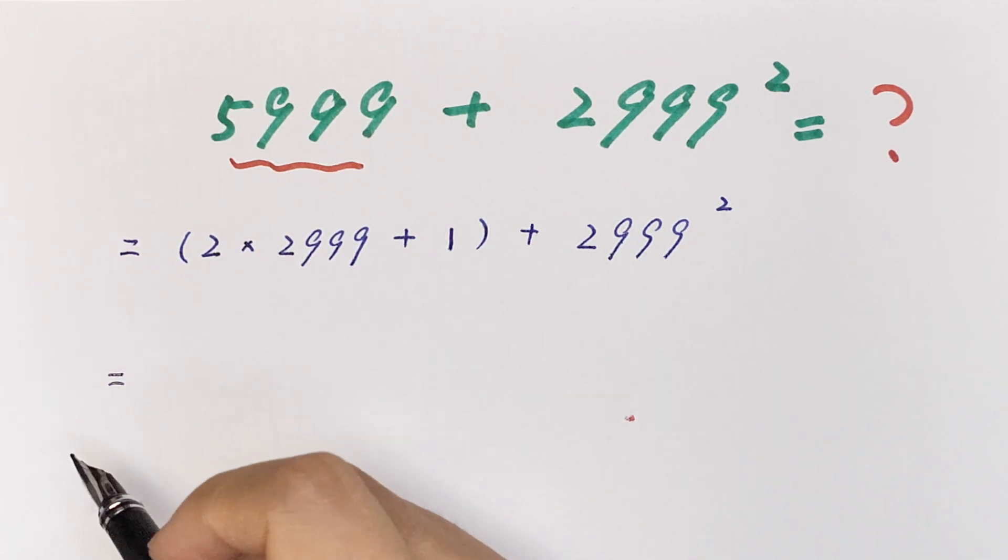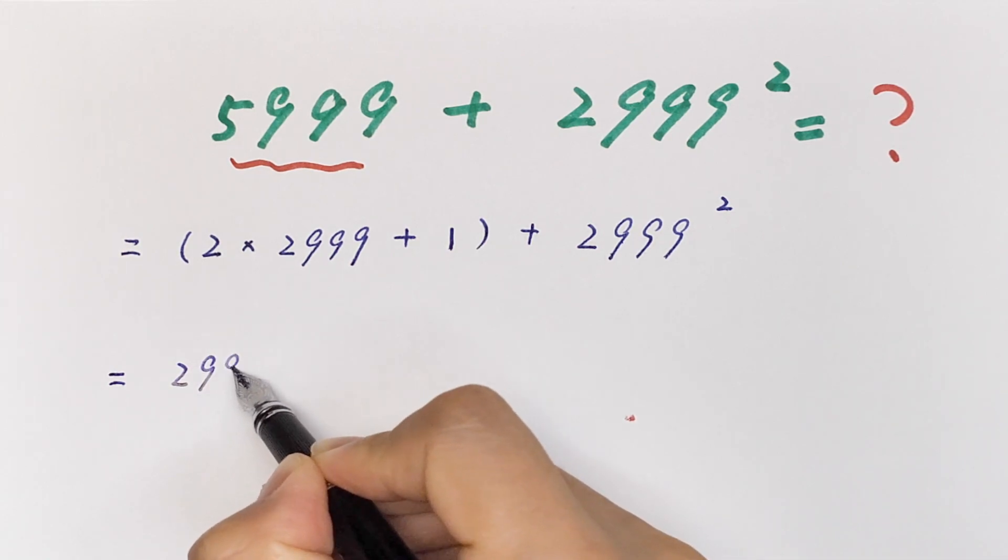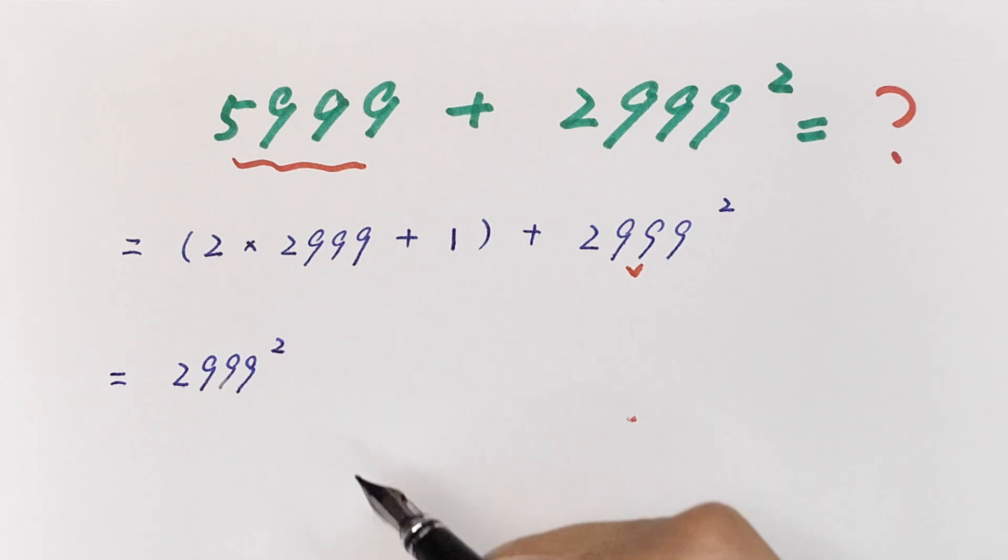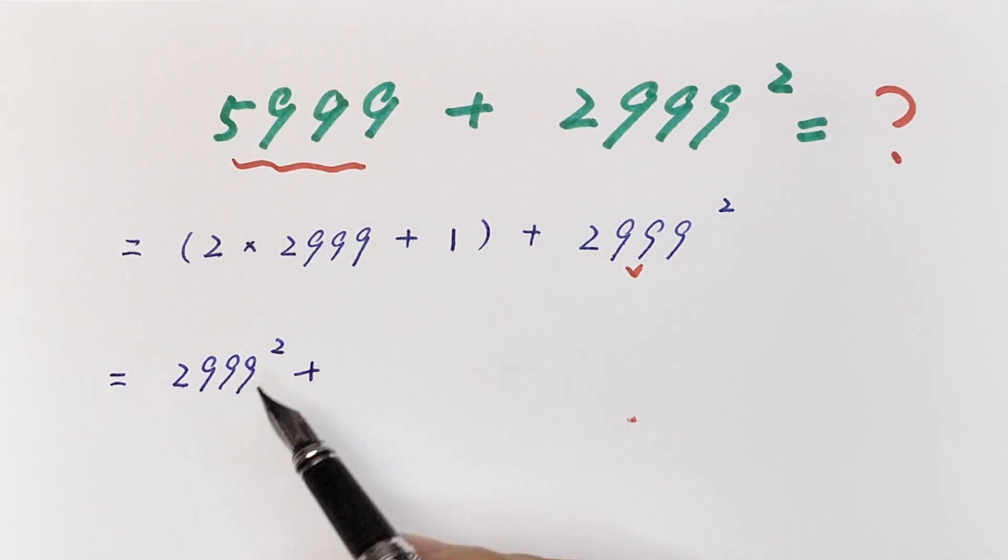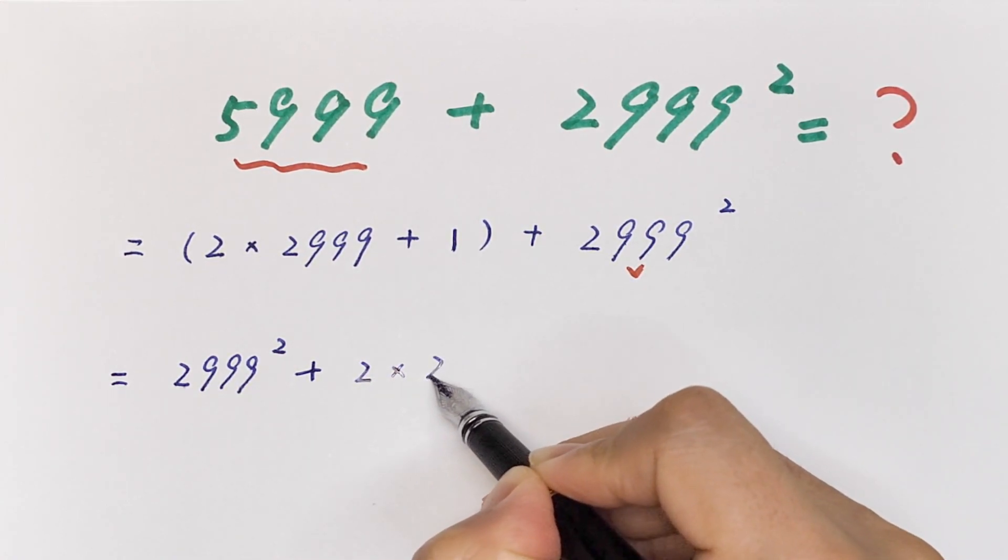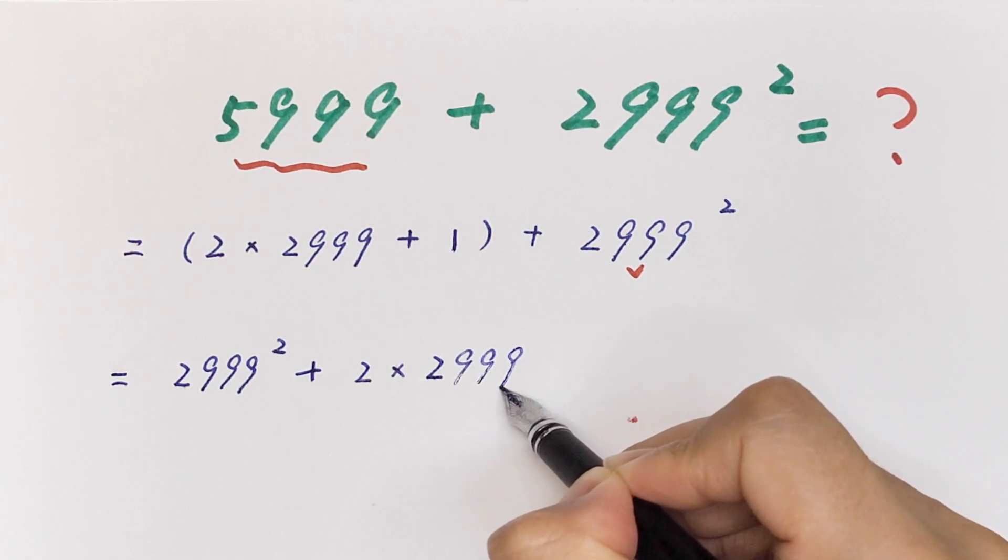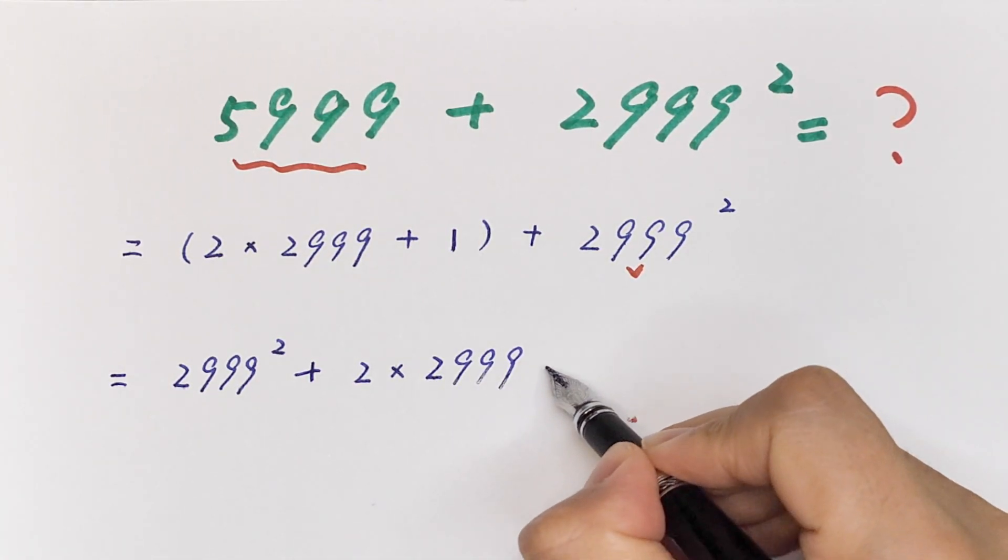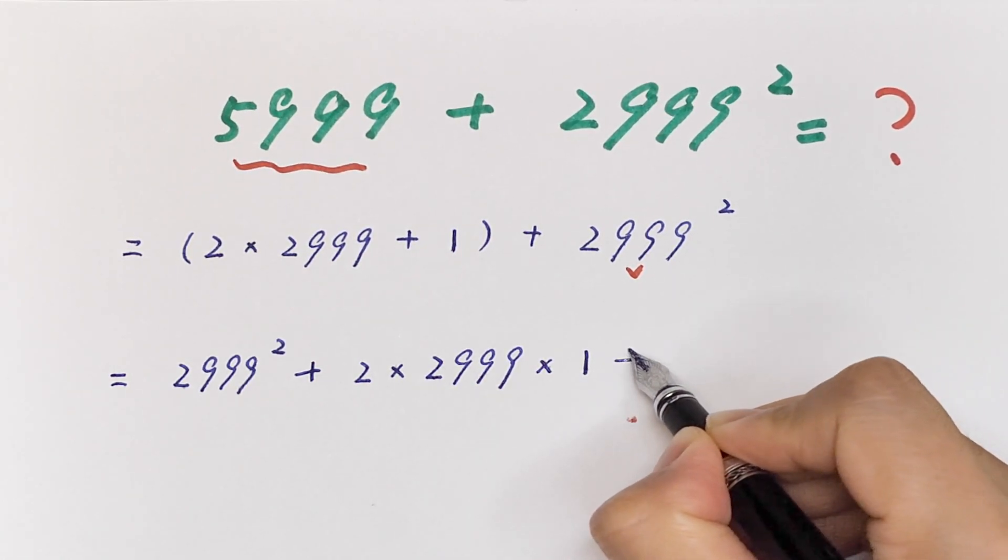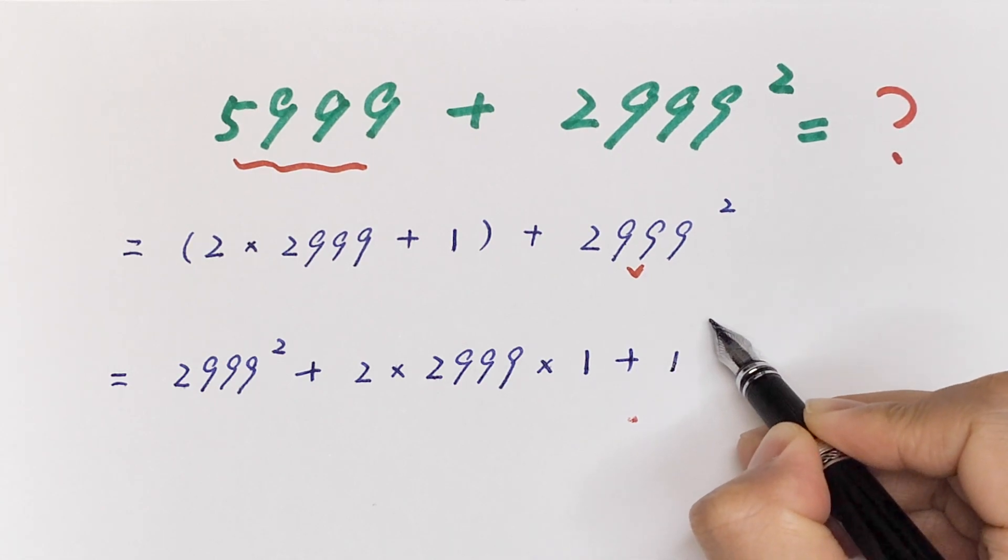We open the bracket. 2999 square, plus, we open the bracket, 2 times 2999 times 1, plus this is the same as 1 square.